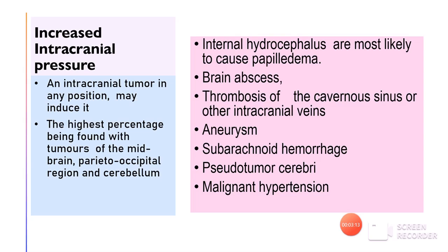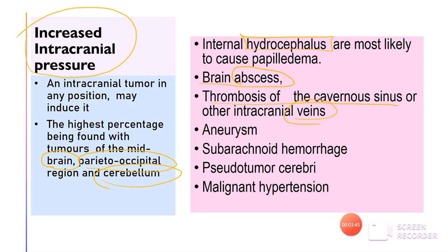Any intracranial tumor can lead to raised ICP, with the highest incidence in tumors of the midbrain, parieto-occipital region, and cerebral tumors. Hydrocephalus is an important cause of papilledema. Similarly, a brain abscess can act as a space-occupying lesion. Thrombosis of the cavernous sinus or any vein reduces CSF absorption and raises ICP. An aneurysm can act as a space-occupying lesion. Subarachnoid hemorrhage blocks CSF flow, raising CSF pressure.